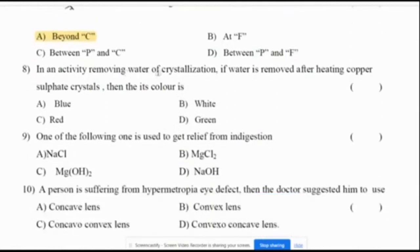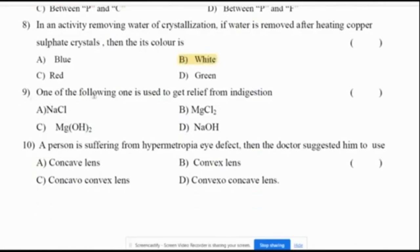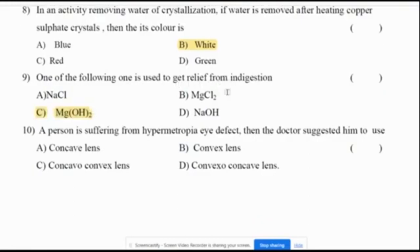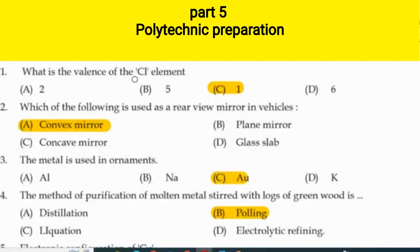In an activity removing water of crystallization, if water is removed after heating copper sulfate crystals, the color will be white. One of the following is used to get relief from indigestion — MgOH2, magnesium hydroxide, is used to give relief from indigestion.